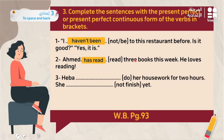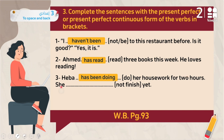'Heba ___ do her housework for two hours. She not finish yet.' Here it's specified she hasn't finished yet — she started two hours ago and is still going. Since the action is ongoing, this is the present perfect continuous: 'Heba has been doing.' And 'yet' is a keyword of the present perfect with negative: 'she hasn't finished yet.'